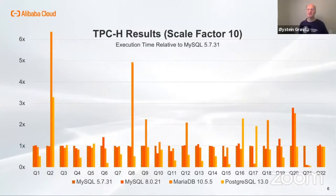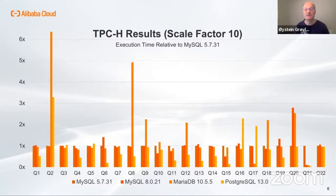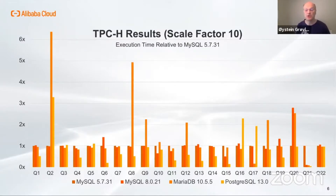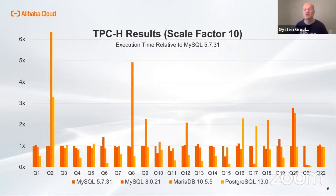Here are the results from running 22 TPC-H queries with a scale factor 10 database for MySQL 5.7, MySQL 8, MariaDB 10.5, and Postgres version 13. To present it all in one diagram, I have scaled the results so that the execution time for MySQL 5.7 is always set to one. We do not have time to go into all the details here, but you see that MariaDB is significantly slower for five queries, and the common reason seems to be that less efficient join orders are used for those queries.